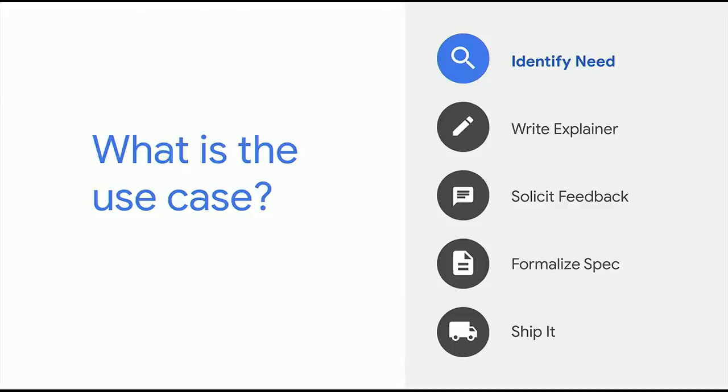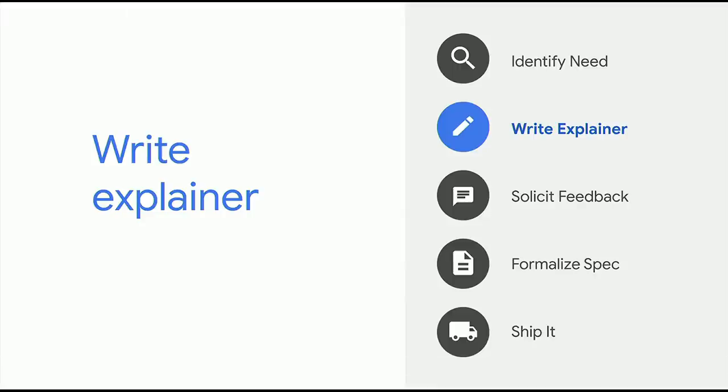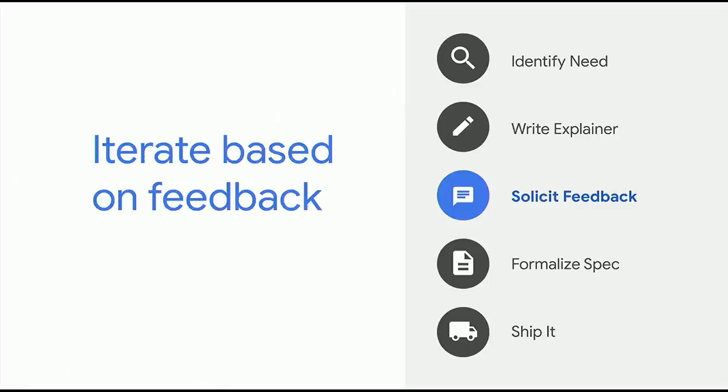So how do we do this? The first step is we identify a need — a specific use case. Many of these are things that you've told us about, either by talking to us directly or by filing a feature request on crbug.com. As we start to think about the API, we put our initial thinking into an explainer — essentially a design doc that is meant to explain the problem and show some sample code about how we think this problem is going to get solved. Once the explainer has a reasonable level of clarity, it's time to publicize it and start to solicit feedback from you so that we can iterate on the design.